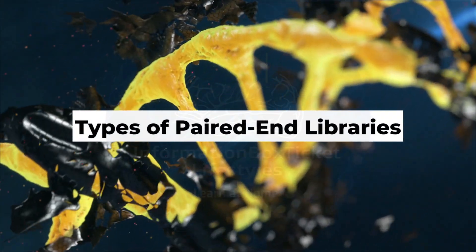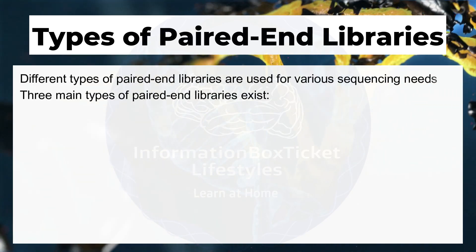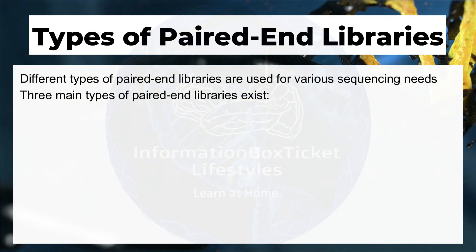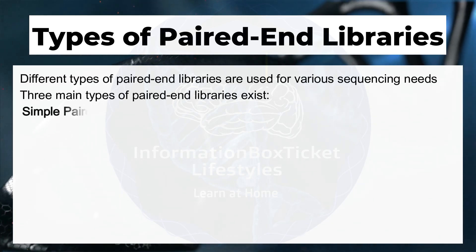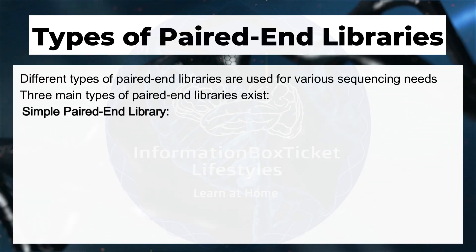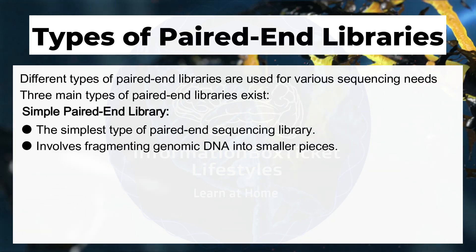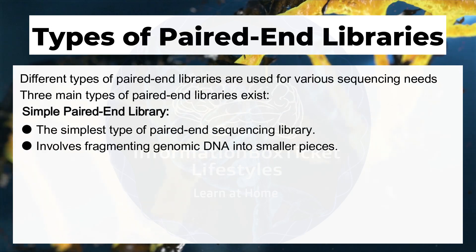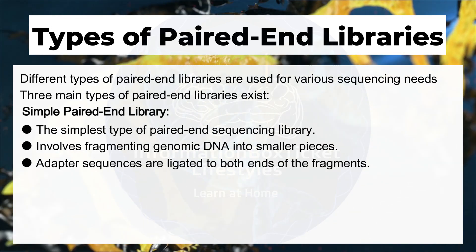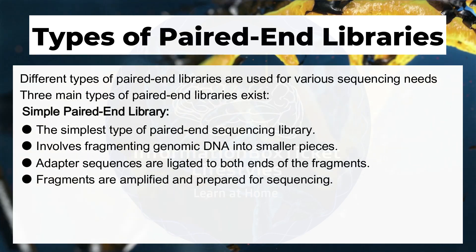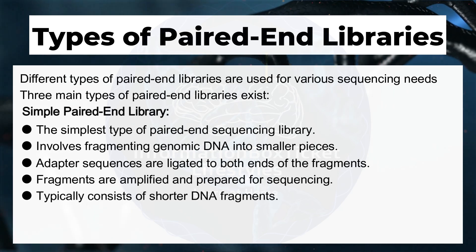Different types of paired-end libraries are used for various sequencing needs. The simple paired-end library is the simplest type, involving fragmenting genomic DNA into smaller pieces. Adapter sequences are ligated to both ends of the fragments, which are then amplified and prepared for sequencing. This type typically consists of shorter DNA fragments.